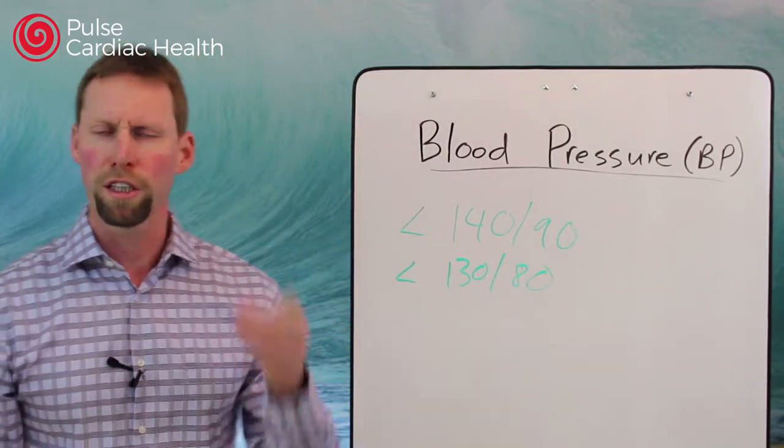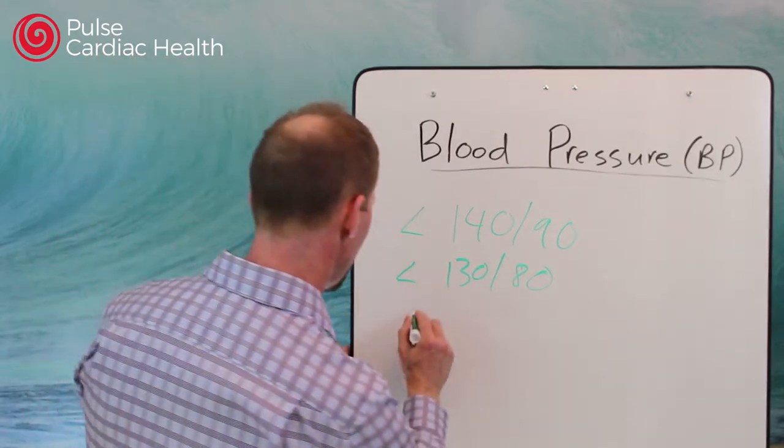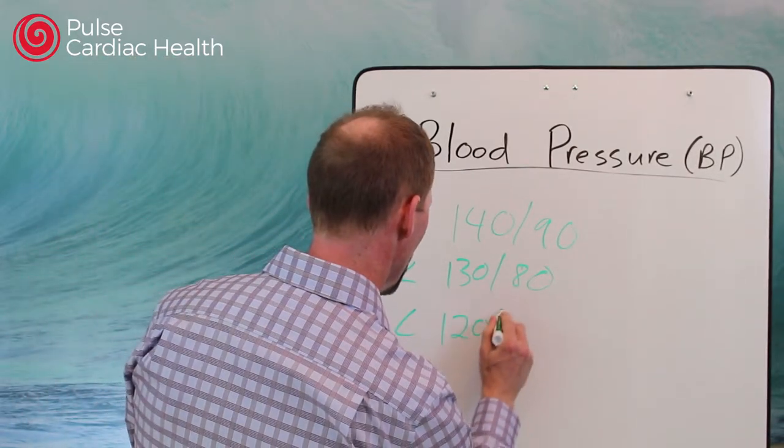If you have blocked arteries in your neck, your heart, your legs, anywhere in your body, or if you have chronic kidney disease, your blood pressure needs to be less than 120 over 80.